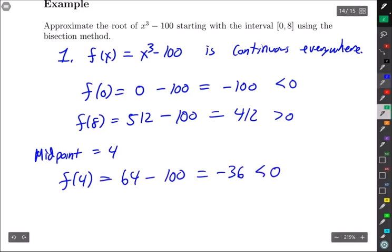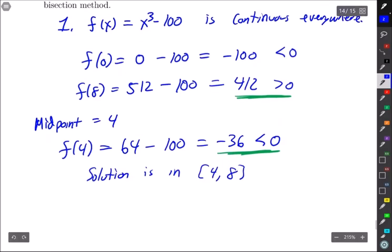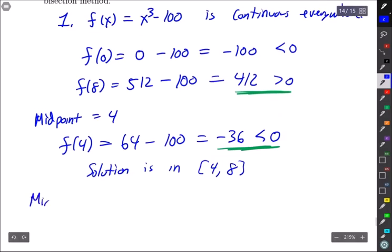Well this says if I pair this negative with that positive I get a smaller interval where I can still apply IVT to say there's a solution in there. So solution is in [4,8]. Let's keep going. The midpoint here is 6.